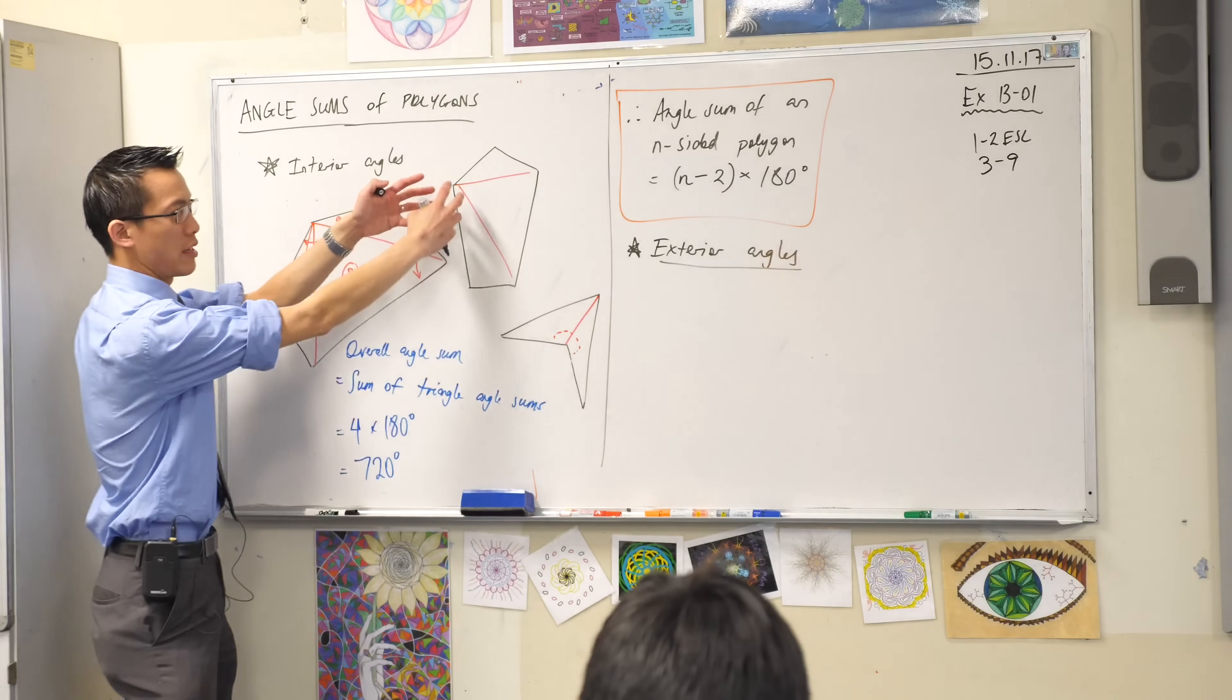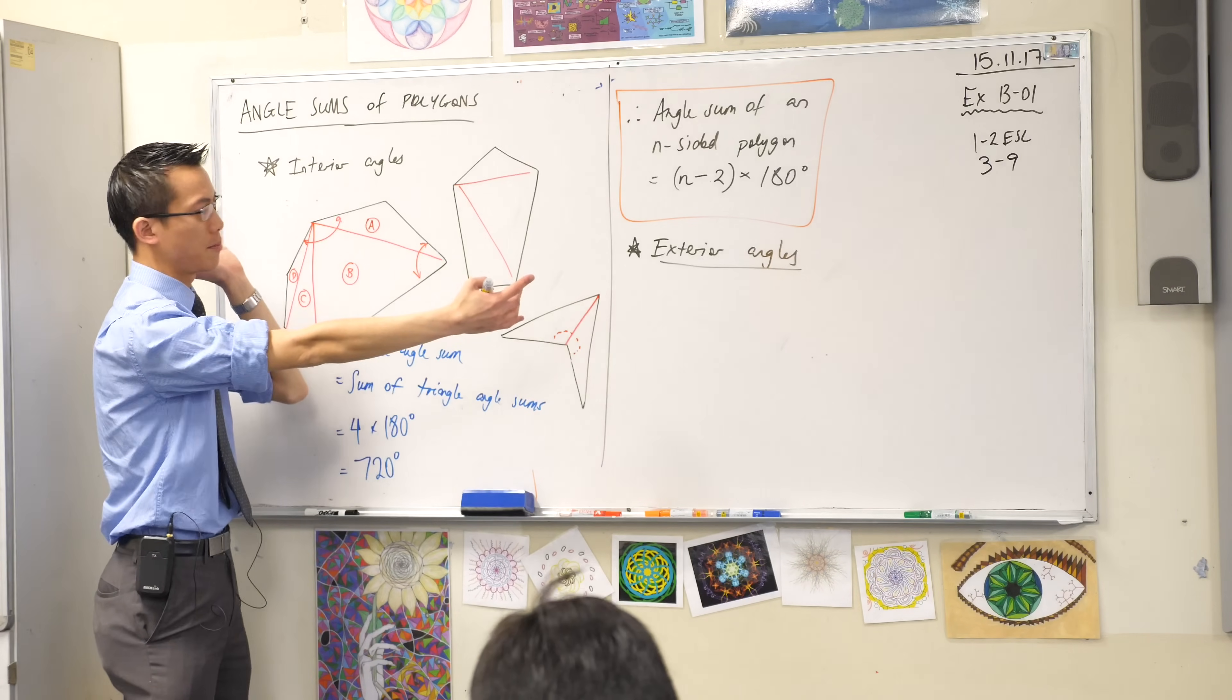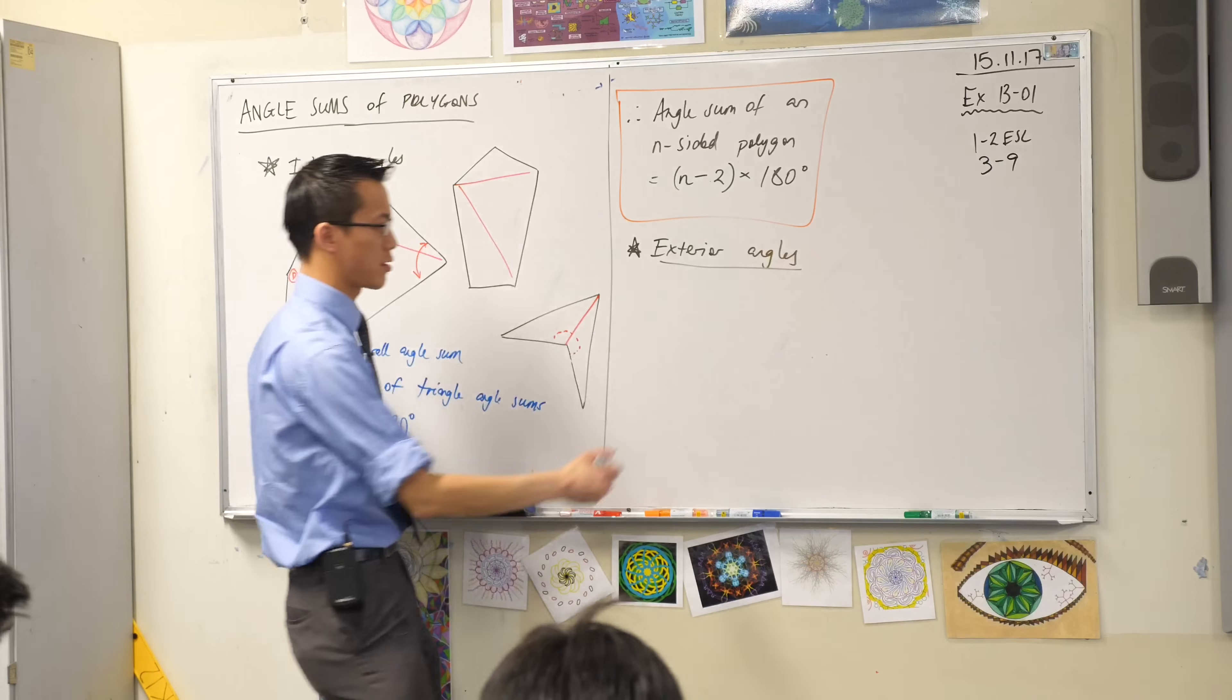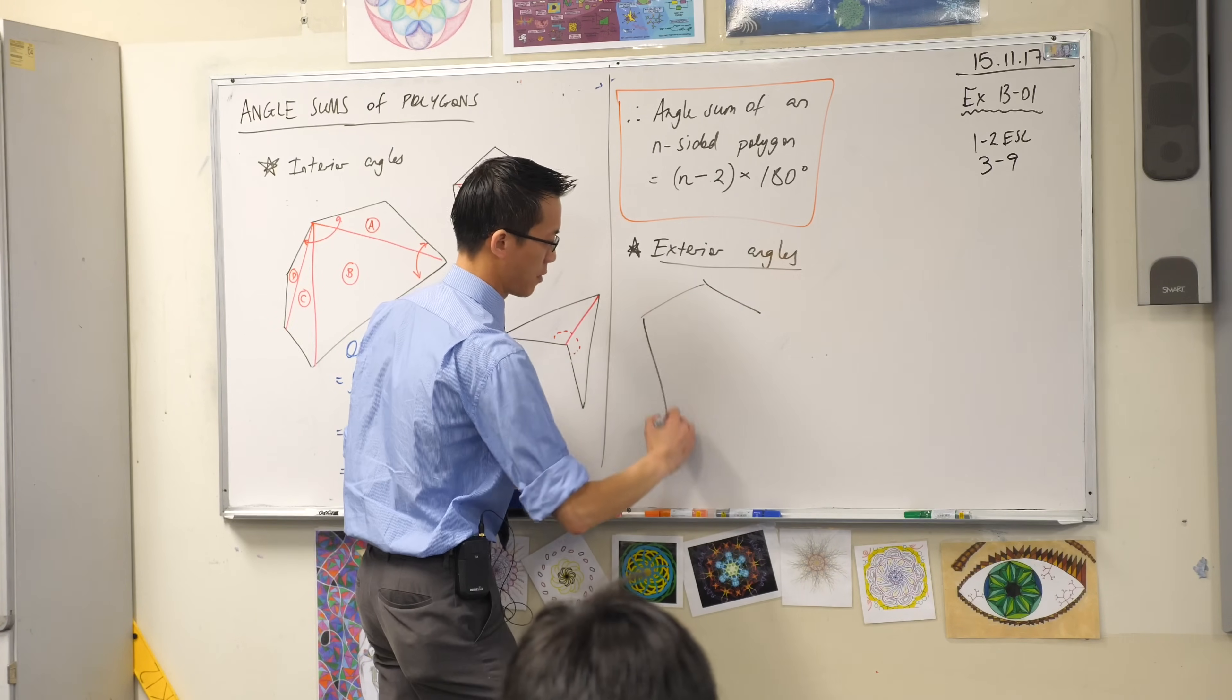Exterior angles mean the angles on the outside of the shape, but you do it in a particular way. So what I'm going to do is let me redraw this one because it's a bit easier to replicate.